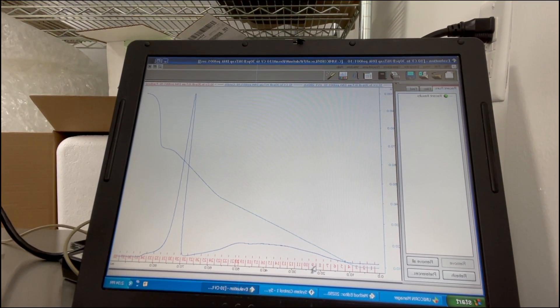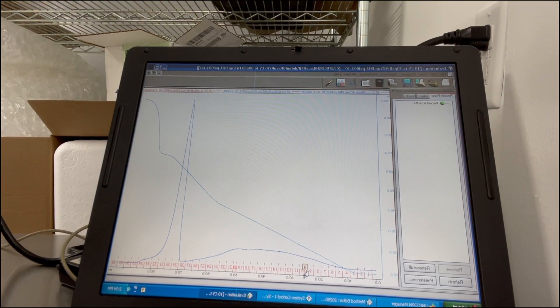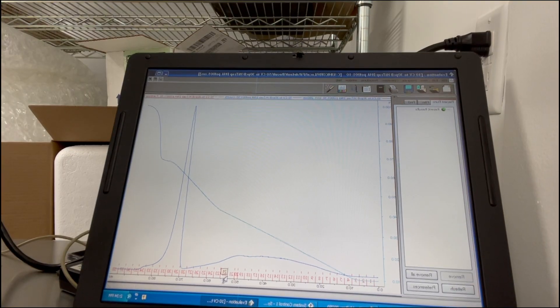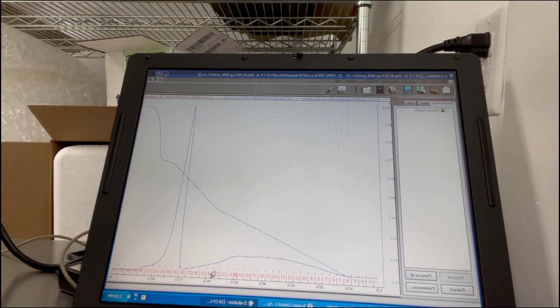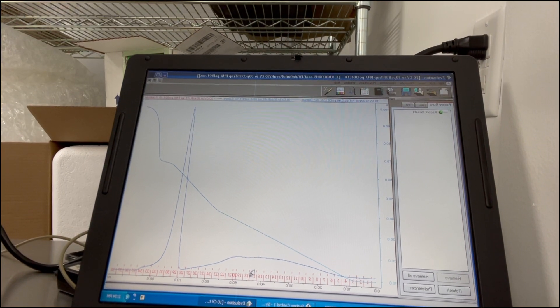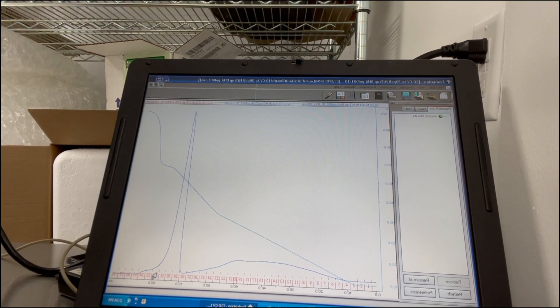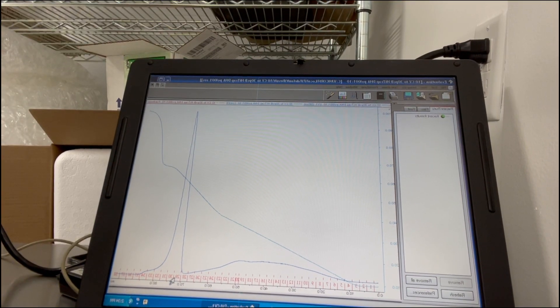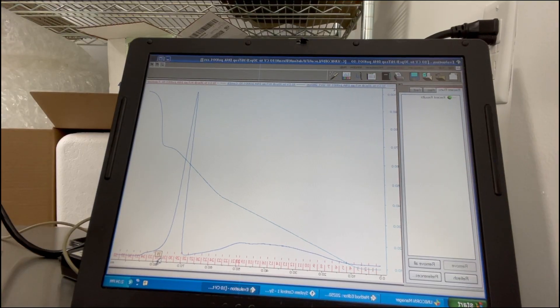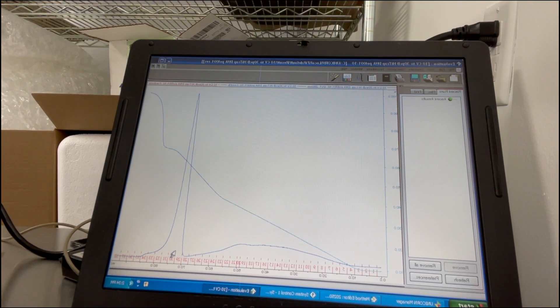And you can see that the UV absorbance starts going up around fraction 9 and it stays high until about fraction 21 when it goes back down. There's something eluting from the column during that time. And there's something else eluting from the column at fractions 29 to 31. It makes a really tall peak. And I know from experience that this is a DNA peak.